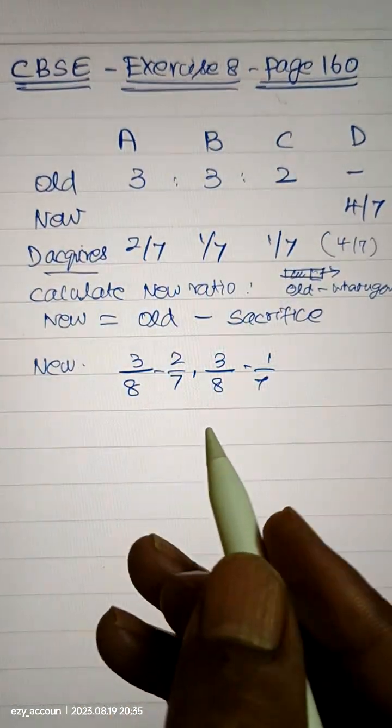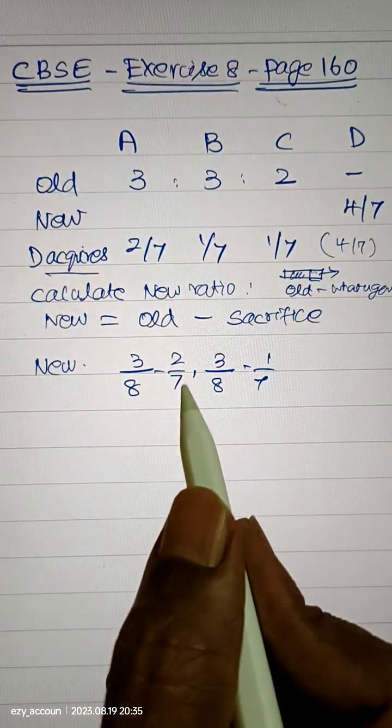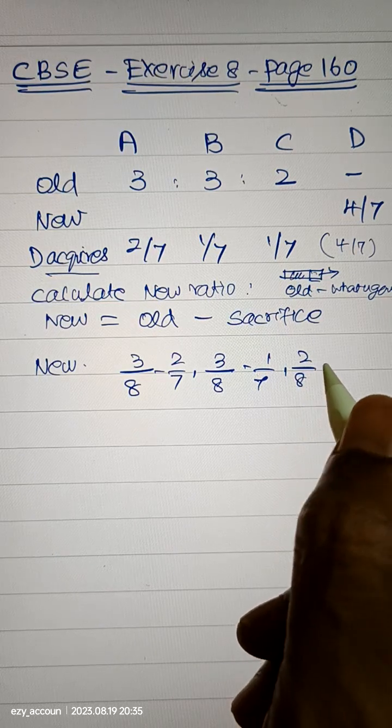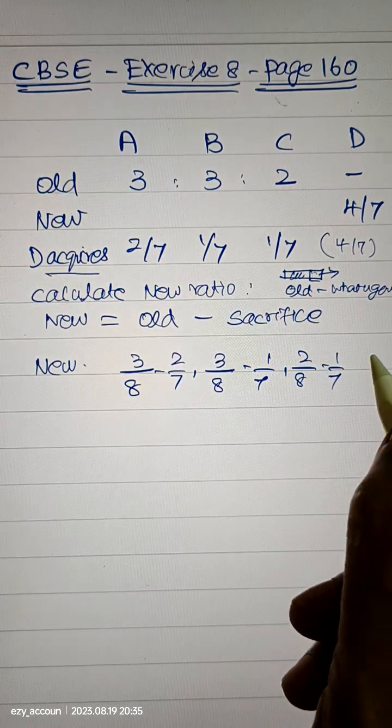3 is their share, old share. 2 by 7 is already given, 1 by 7, and the third one is 2 by 8 minus 1 by 7. D gets 4 by 7, we can continue.